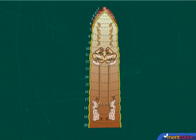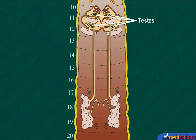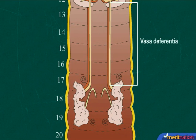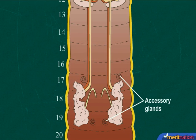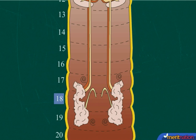Now let us take the male reproductive system. It consists of two pairs of testes in the 10th and 11th segments. From the testes, vasa differentia runs up to the 18th segment where they join the prostate duct. One pair of accessory glands is present each in the 17th and 19th segments. The common prostate and vasa differentia opens to the outer side through a pair of male genital pores in the 18th segment.